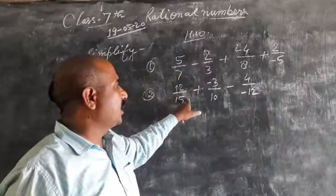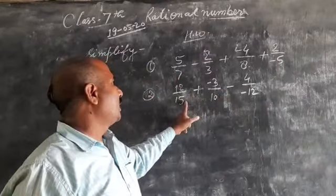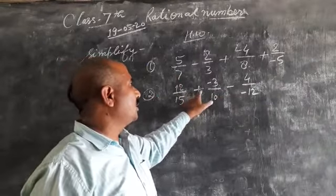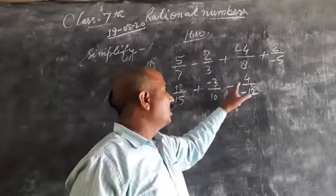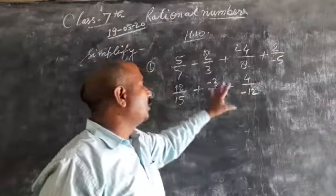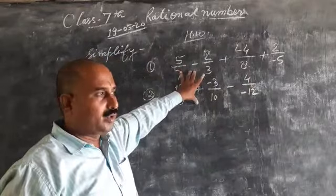And in second question, there are three rational numbers with different signs, 12 by 15 plus minus 3 by 10 minus 4 by 12.